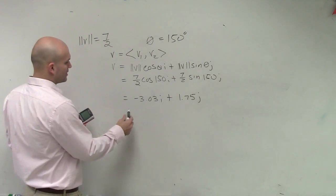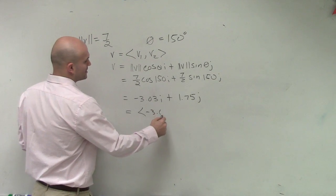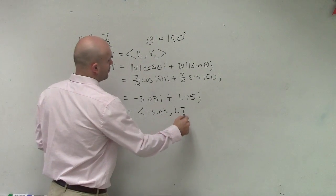So therefore, in component form, we can rewrite this as negative 3.03 comma 1.75.